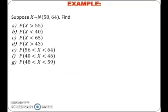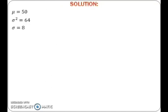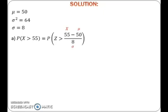Now let's look at an example on how to find probability of normal distribution given a value. Suppose that a random variable x has a normal distribution with mean equals to 50 and variance equals to 64. Since variance equals to 64, standard deviation is equals to 8. To find probability of x greater than 55, first change normal distribution to standard normal distribution by using formula x minus mu over sigma. Here we get probability of x greater than 55 equals to probability of z greater than 0.63.